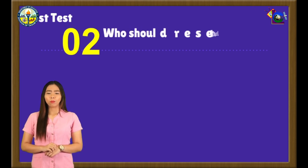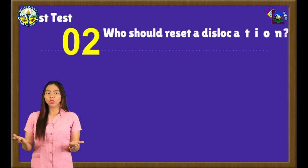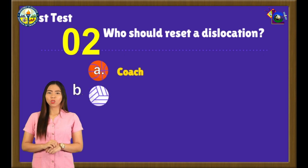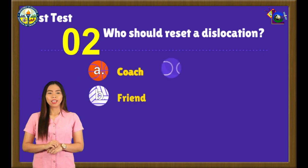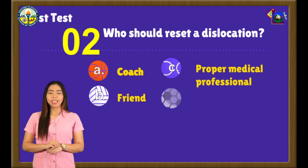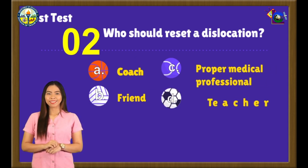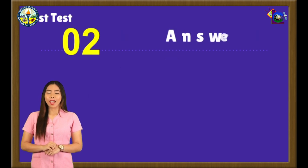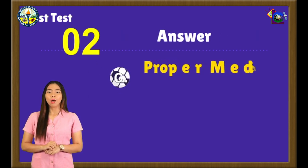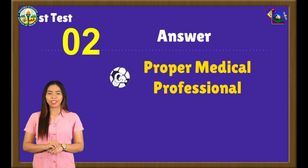Number 2. Who should reset a dislocation? A. Coach. B. Friend. C. Proper medical professional. D. Teacher. The correct answer is letter C: Proper medical professional.